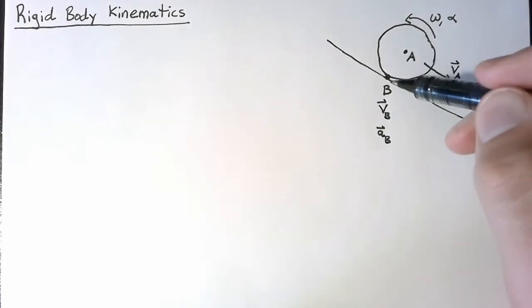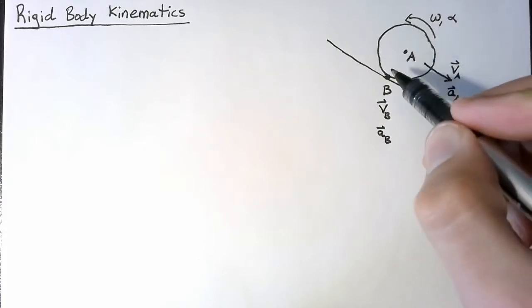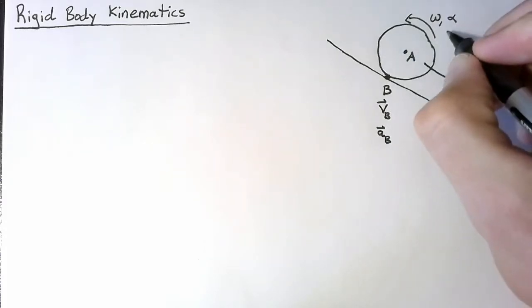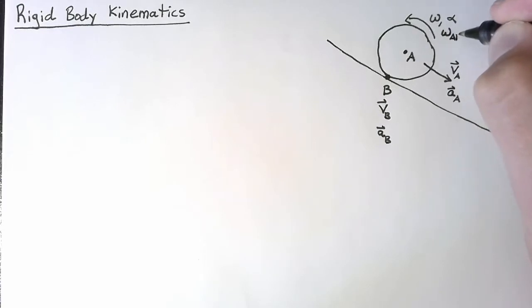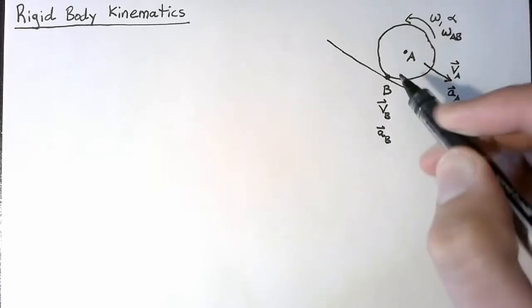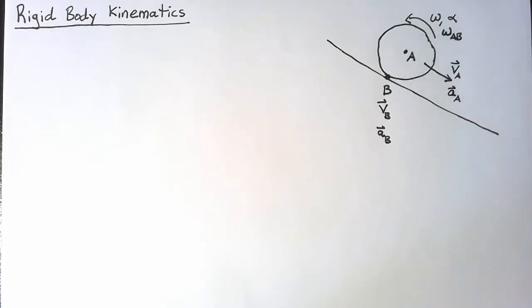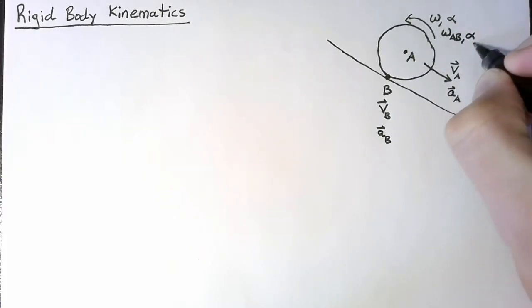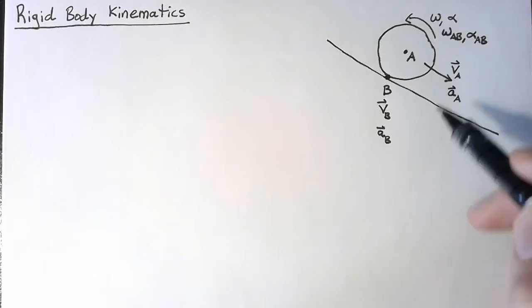If we're talking about point B being the point on the ball or cylinder, then both of these share omega. Especially when thinking about something with multiple links or bodies, we would call this omega of body AB — the rotation rate of the body that contains both A and B. We could do the exact same thing for alpha. There's no difference; it's just naming things to be as clear as possible.